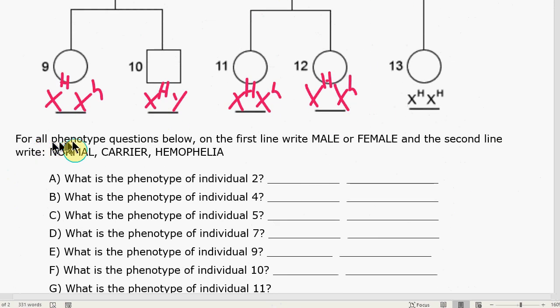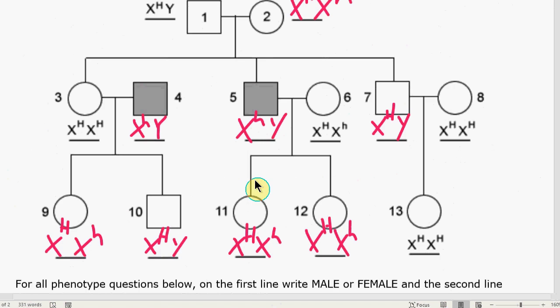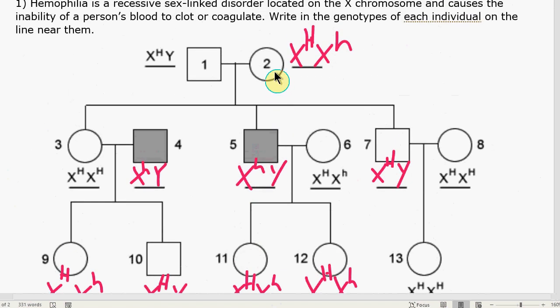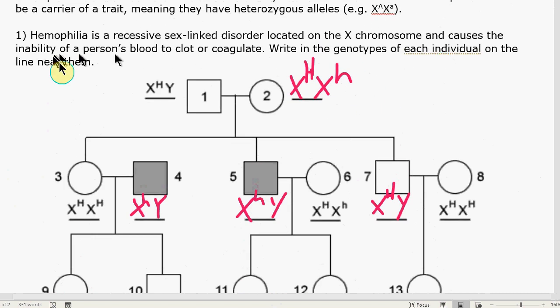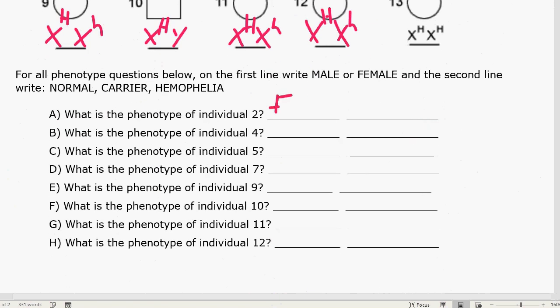And again, we were able to figure out everybody on here. So let's take a look at the bottom here. And it says, for all phenotype questions below, on the first line, write male or female. And on the second line, write normal carrier or hemophilia. Question A, what is the phenotype of individual number two? So number two is a carrier of hemophilia, because she has the little h gene. This one didn't ask us to shade them in, so we're not shading these in like we did the last one. Number A is a female, and she is a carrier.